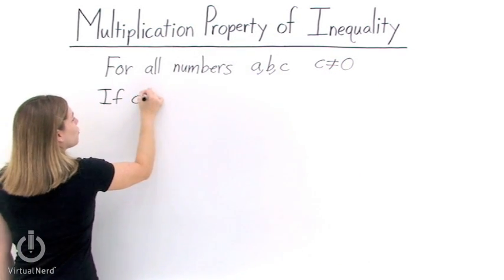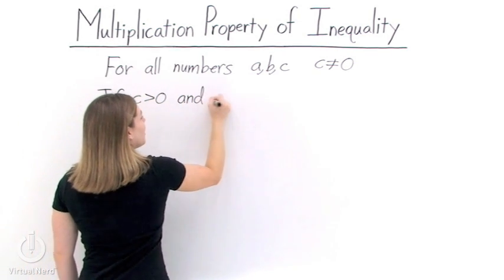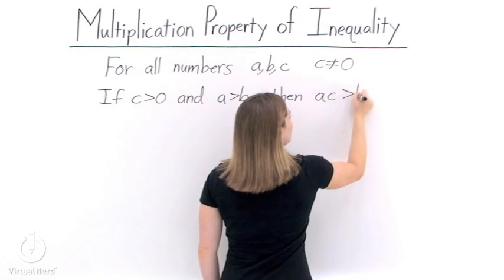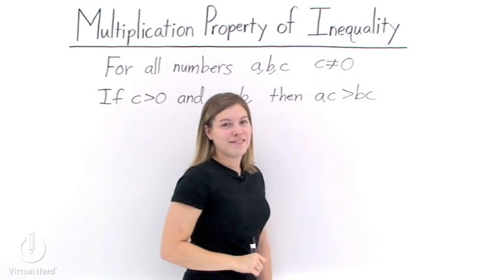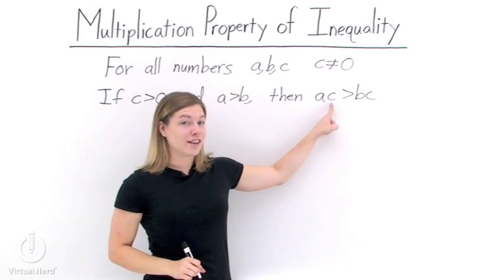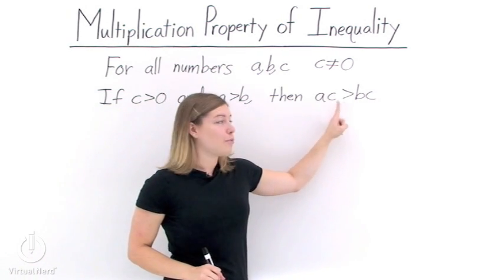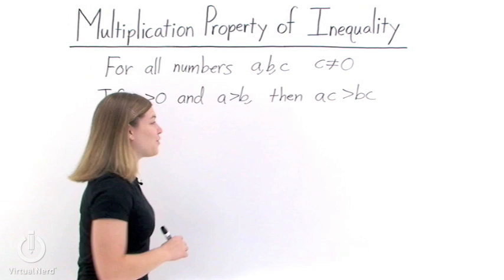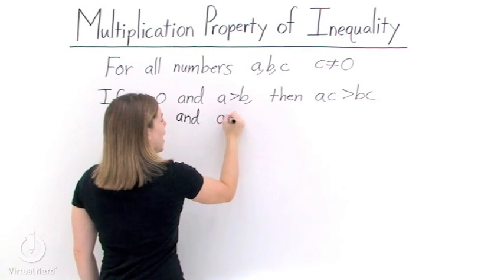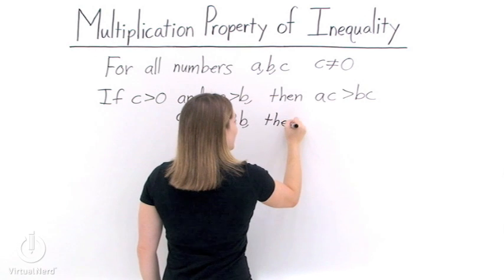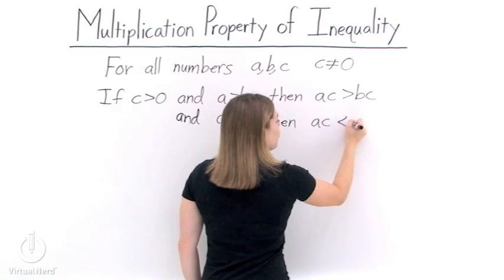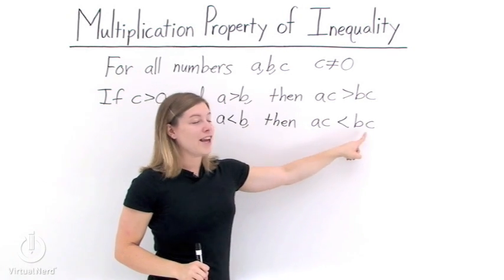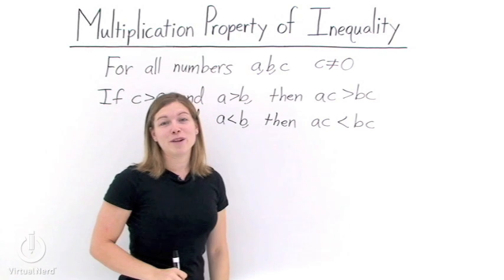If c is greater than 0, so c is a positive number, and a is greater than b, then a times c is greater than b times c. In other words, if we multiply by c on the left-hand side of our inequality, we must also multiply by c on the right-hand side in order to preserve the inequality. The same thing goes for less than: if a is less than b, then a times c will be less than b times c. We multiply by c on both the left and right-hand sides to preserve the inequality.